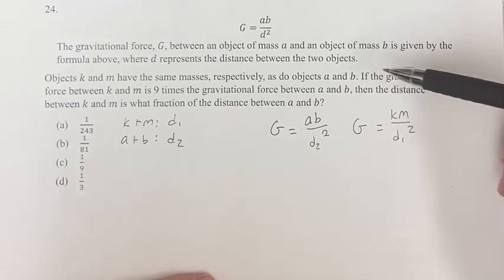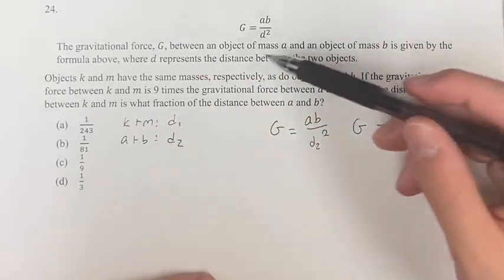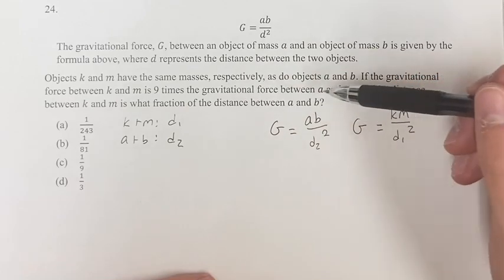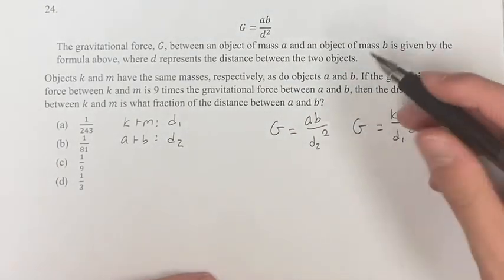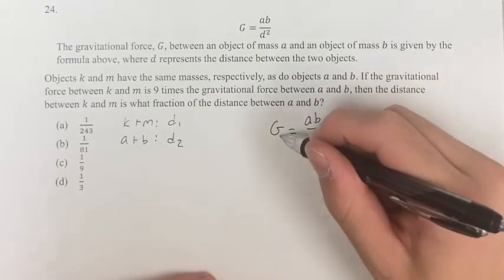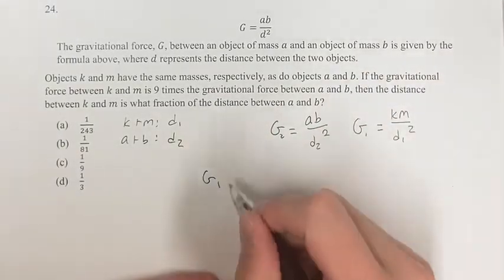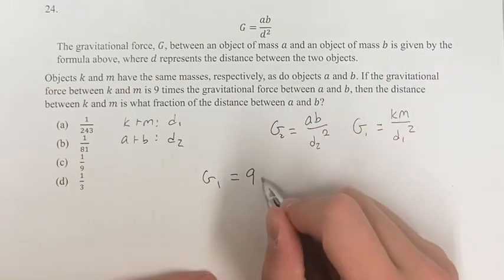We're told that the gravitational force between K and M is nine times the gravitational force between A and B. So this force, let's call this G1 and this one G2. G1, the one for K and M, is nine times the one for A and B, which is G2.